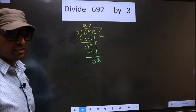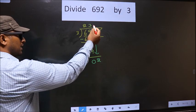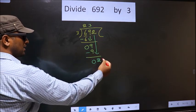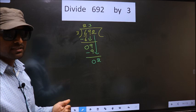2 is smaller than 3. So, what many do is, they put a dot and take 0 here. Which is wrong.